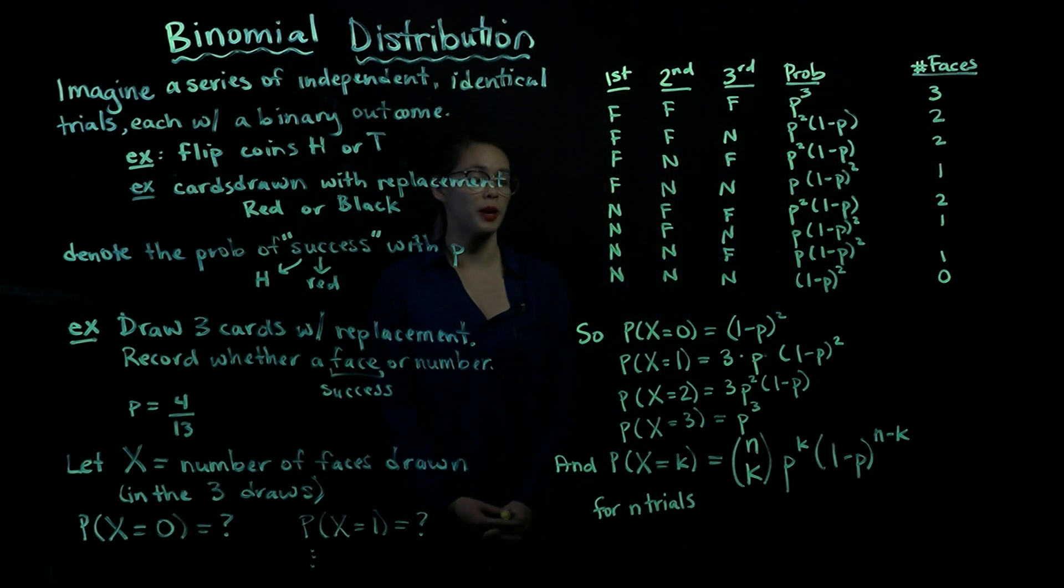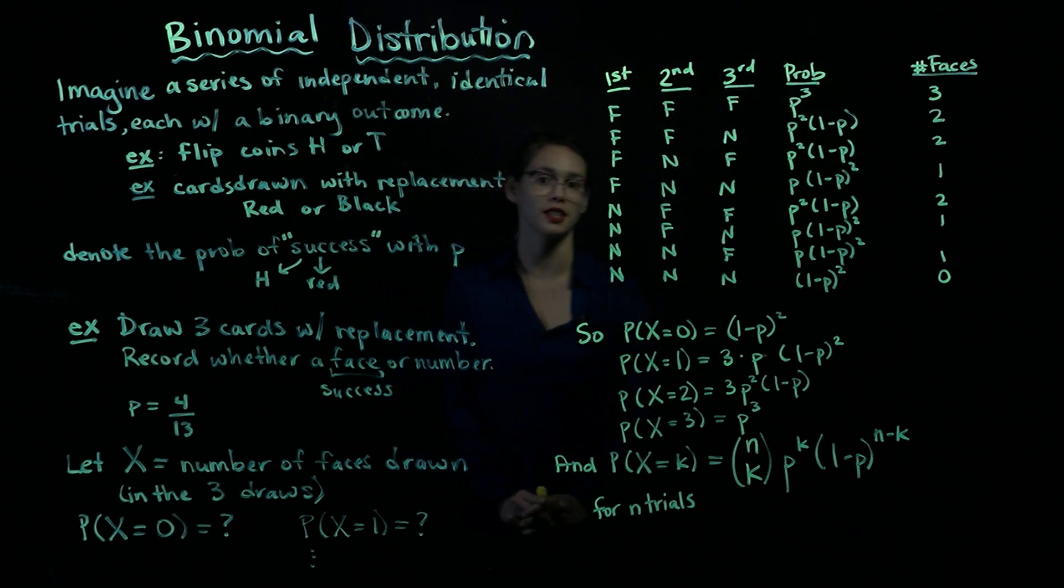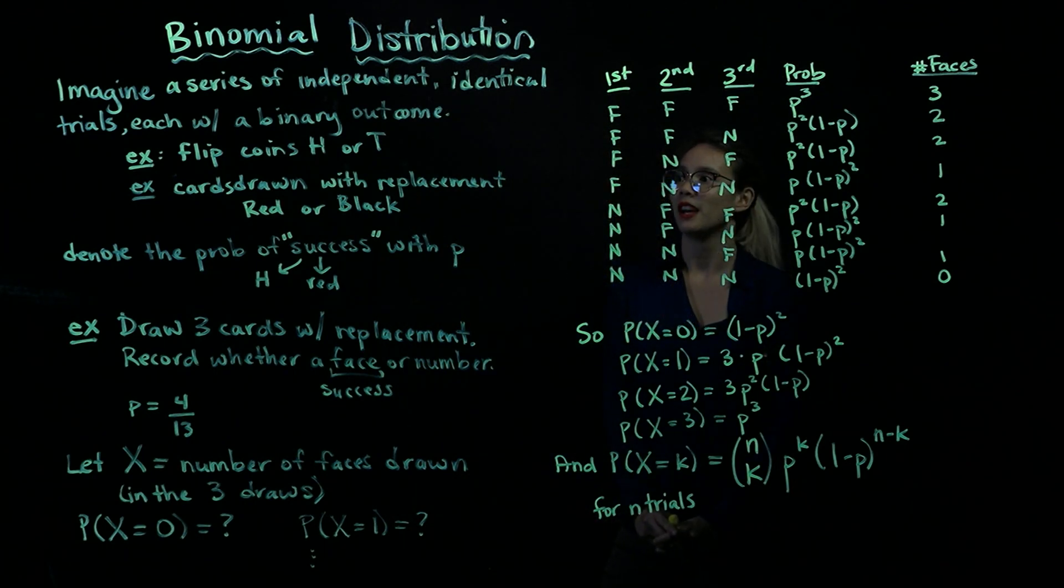In previous videos, you learned about discrete random variables, and now we're going to talk about one special type of discrete random variable, which is the binomial. So to understand the binomial distribution, we're going to imagine a series of independent identical trials, and each trial has a binary outcome.